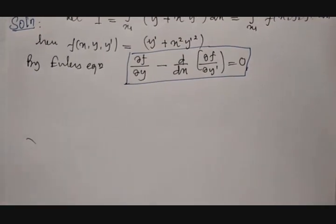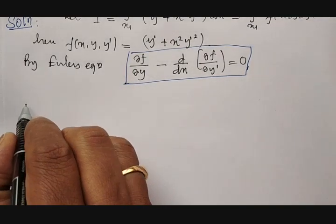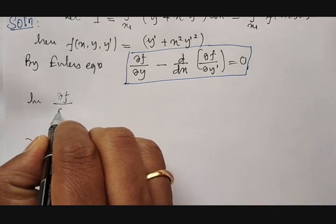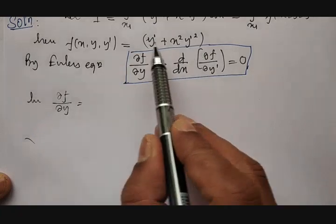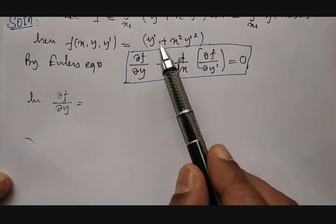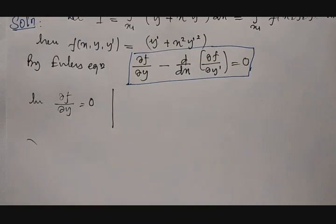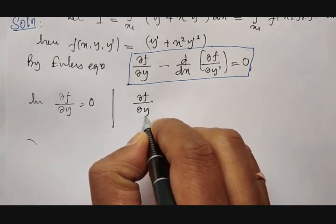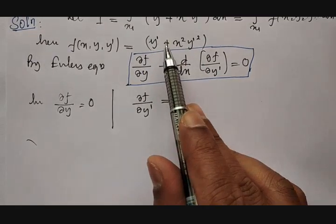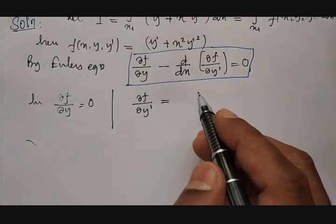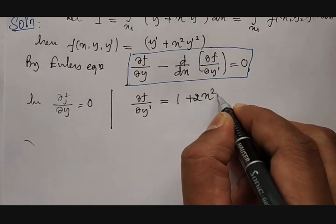Since the given function is this, what is required? Differentiation of f with respect to y. Is there any y term here? No — y' is there, but y' is different from y. Since the y term is not there, when we differentiate f with respect to y, it becomes 0. Then, differentiating f with respect to y': differentiation of y' with respect to y' is 1, plus x squared common and differentiation of y' squared gives 2y'.